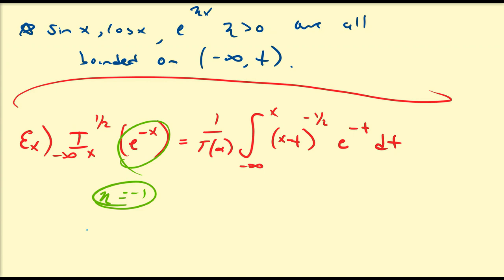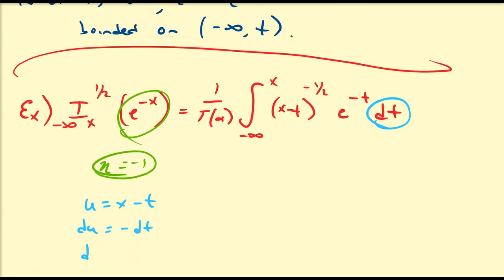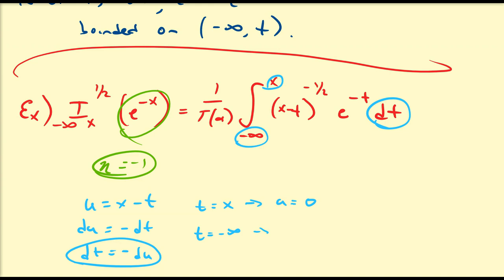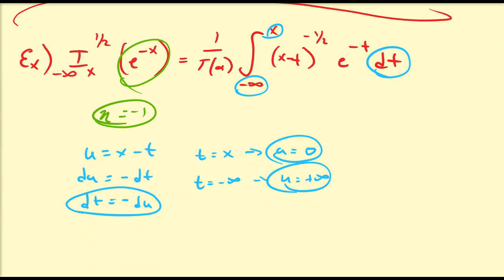I'll use u-substitution. Let u equal x minus t, so du equals minus dt, or dt equals minus du. Working out the limits: when t equals x, u equals x minus x, which is zero. When t equals minus infinity, x is a fixed finite number, so x minus negative infinity gives a positive infinite quantity. So the limits of integration go from positive infinity down to zero, and we use the minus sign to reverse them to be natural.